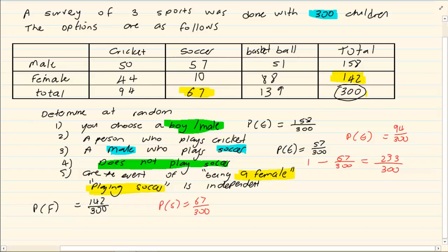Now what is the probability of being a female and playing soccer? Female and soccer is 10 over 300.